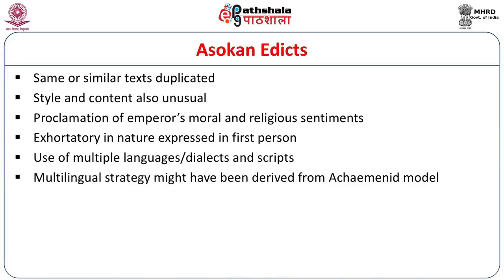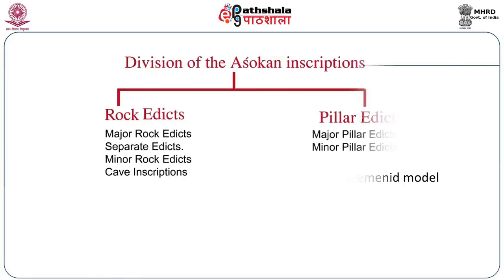In these inscriptions there is use of multiple languages, multiple dialects and scripts. This multilingual strategy might have been derived from the Achaemenid model. Looking at the Ashokan inscriptions in a broader context, they can be divided into two major categories: rock edicts and pillar edicts.